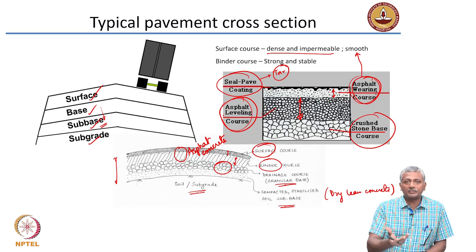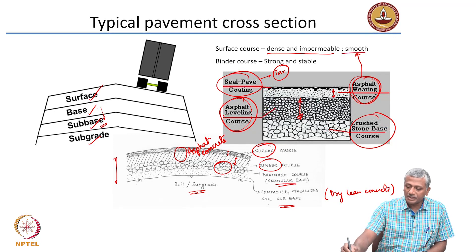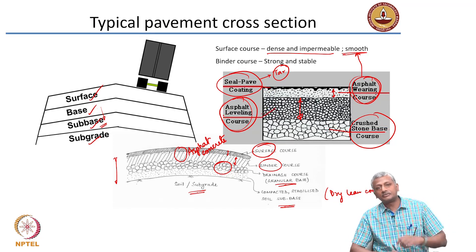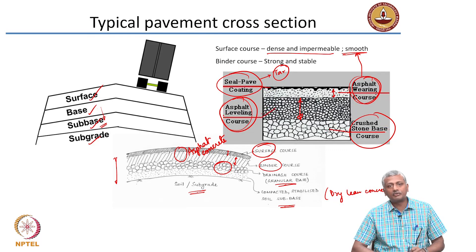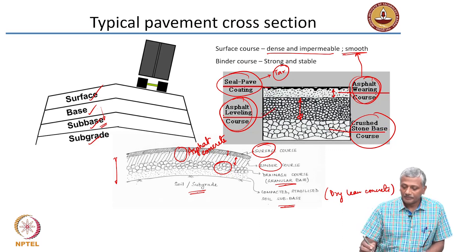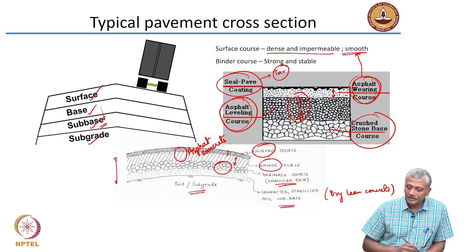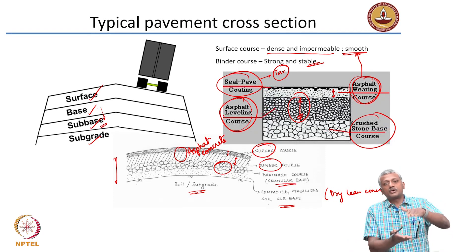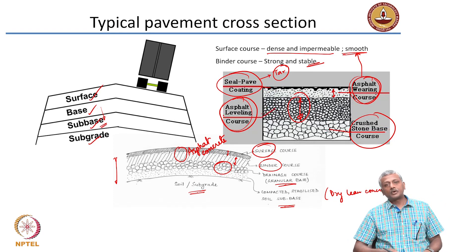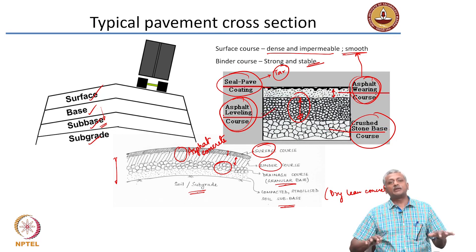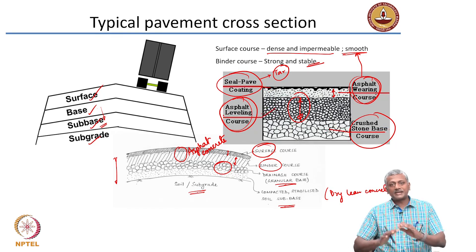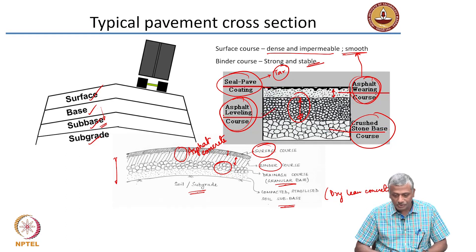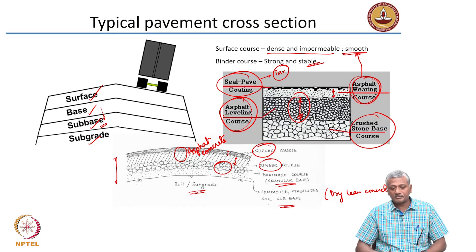The surface course, or asphalt bearing course, must be dense and impermeable so that moisture cannot penetrate, and smooth enough to allow a good ride for vehicles. The binder course, or asphalt levelling course, must be strong and stable since it forms the majority of the asphalt concrete thickness and provides overall stability to the structure.